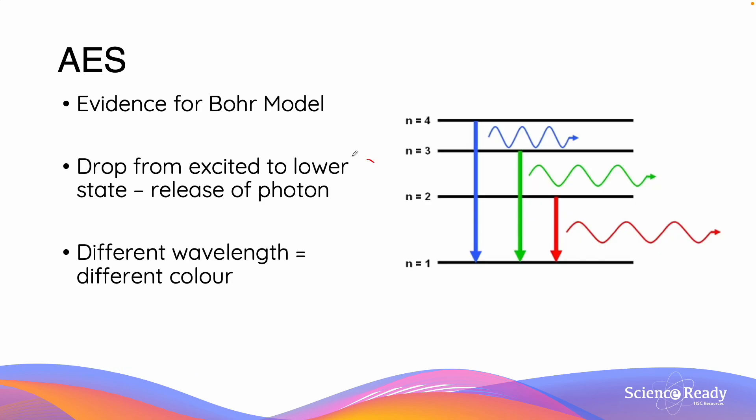AES is particularly important because it provides us evidence for the Bohr model. As we expect from the Bohr model, the drop in electron levels from a high energy state to a lower energy state is going to release a photon producing different colours depending on what their wavelengths are. The light which is produced in the spectra provide evidence for this postulation in which the uniqueness of each of the different elements spectra demonstrates the many different electron states that are in the gas.